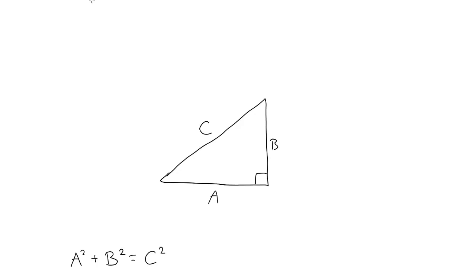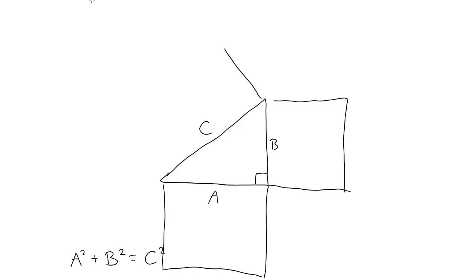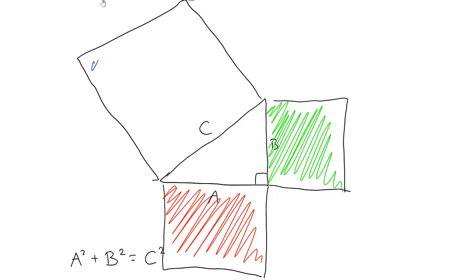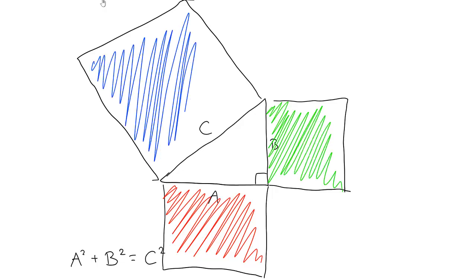Simple enough, but what does that even mean and why do we care? Usually you see it visualized with squares drawn on each side, so the area of this square plus the area of this square will equal the area of that square. It's a nice visual proof, but it's not particularly useful unless you're trying to figure out the areas of squares laid out like this for some mysterious reason. In most cases where the Pythagorean Theorem is useful, the fact of these squares themselves is irrelevant — they're merely a means to an end.